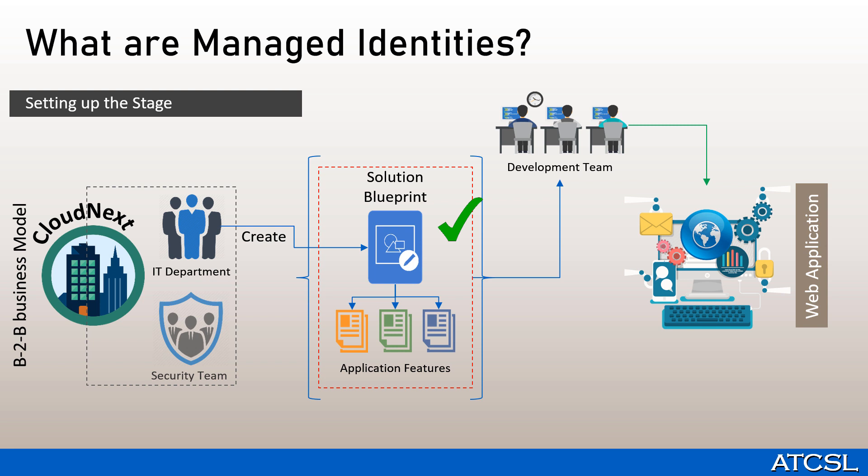After four months, all the modules of the application are complete. But before the application could be launched, it needs to pass through the security scanner in order to get the security team's blessing. The security team discovers that the passwords and other connection string secrets are stored in the configuration file within the application itself and in some other places within the code. The security team raises a red flag and refuses to approve the deployment of the application to production, stating security reasons — which obviously is the right thing. This must have been planned.